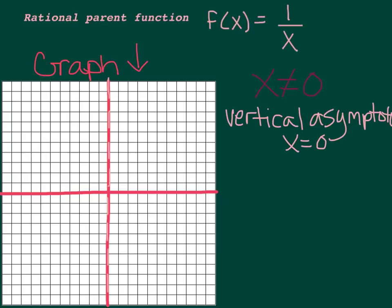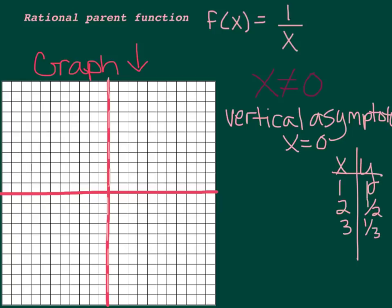If you think about 1 over x and made a table of values: if x was 1, y would be 1 because 1 over 1 is 1. If x was 2, y would be 1 half. If x was 3, y would be 1 third. And it just gets smaller and smaller as x gets larger — it approaches that asymptote. As x gets smaller: if x was 1 half, 1 divided by 1 half is 2. If x was 1 third, 1 divided by 1 third is 3.